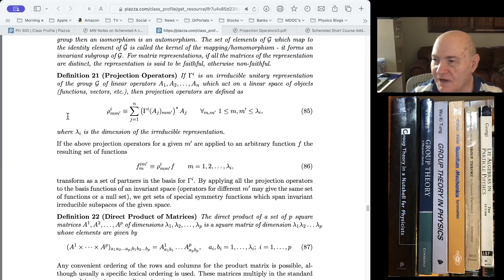The projection operators are defined in addendum A. If we have an irreducible unitary representation of all the group operators, then the projection operators, we define them as being rho.